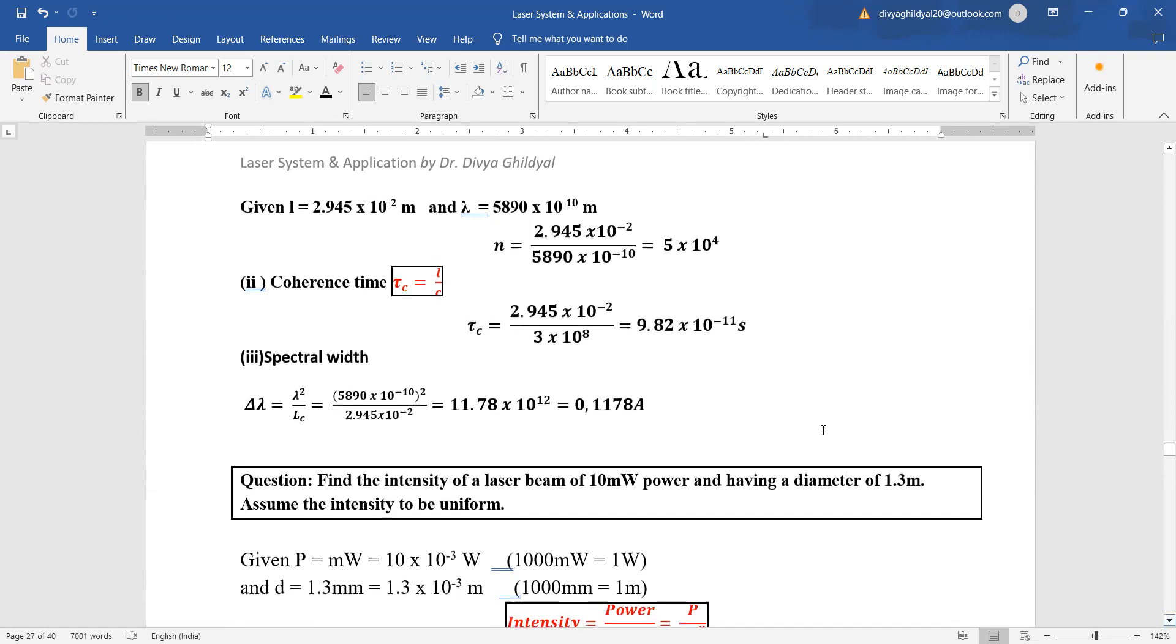So we have to find number of oscillations n, which will be equal to l upon lambda. Coherence time will be equal to l upon c. And spectral width del lambda will be equal to lambda square upon l c.